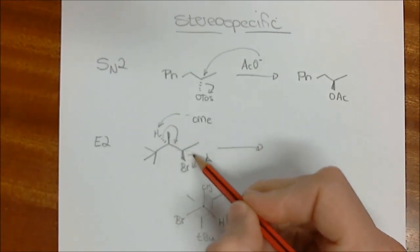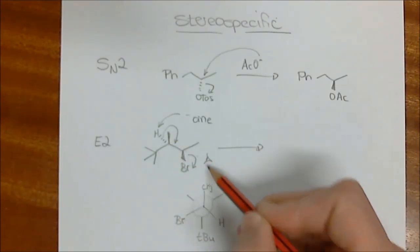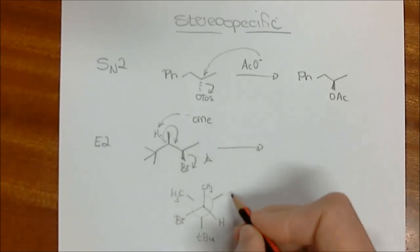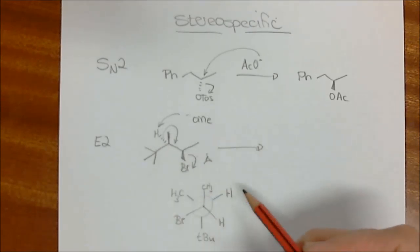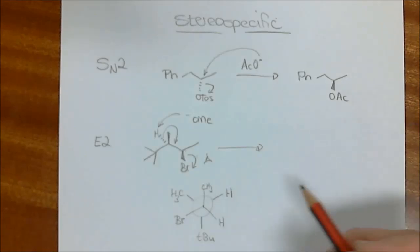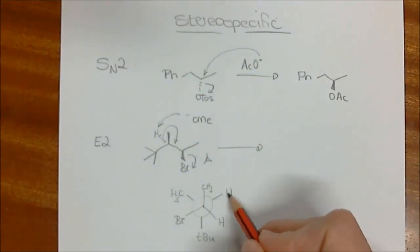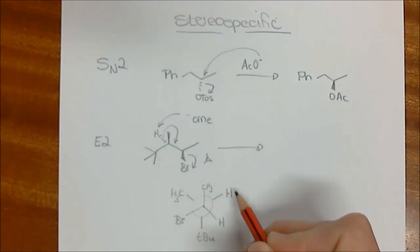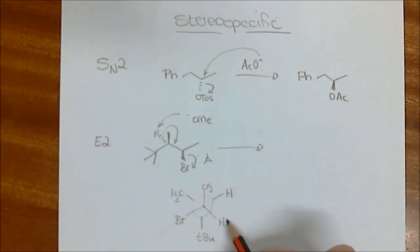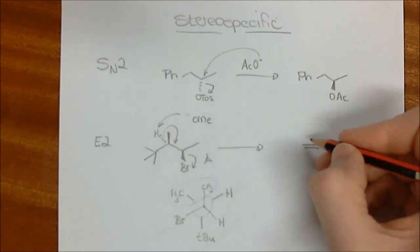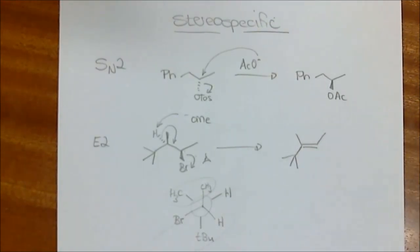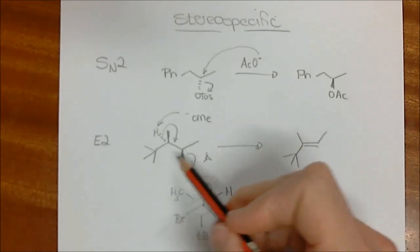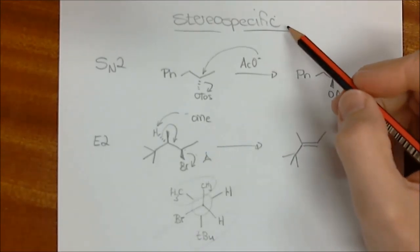The structure has been drawn so that the hydrogen is already behind the bromine — these are the groups that will leave. The base picks up the proton, a double bond forms, and the bromine leaves; they are anti-periplanar to each other. When those groups are removed, the t-butyl and the H are on the same side, and the two methyl groups are on the same side. So in the product, the methyls are on the same side and the t-butyl is on the same side as the hydrogen. This is the only product from E2 elimination on this compound — another example of a stereospecific reaction.